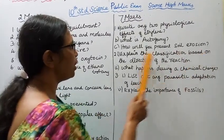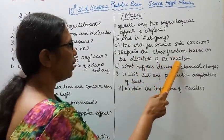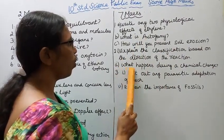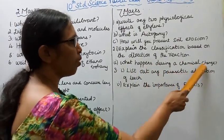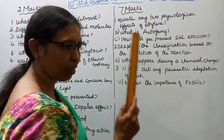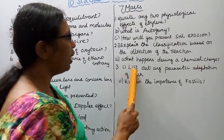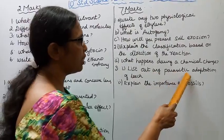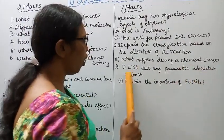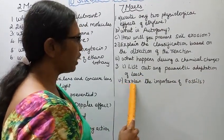What happens during a chemical change? Third: First, list out any parasitic adaptation of leech. Second, explain the importance of fossils.